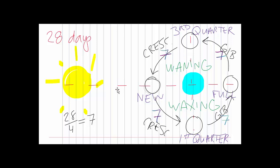For example: what is the moon phase three days after a third quarter? After a third quarter it's a waning crescent. What would the moon phase be right before a full moon? Looking at the arrow right around there — it's a waxing gibbous. How many days from a first quarter to a new moon? Seven, fourteen, twenty-one. Almost any question on a test can be solved with this one cheat sheet you can make in class.